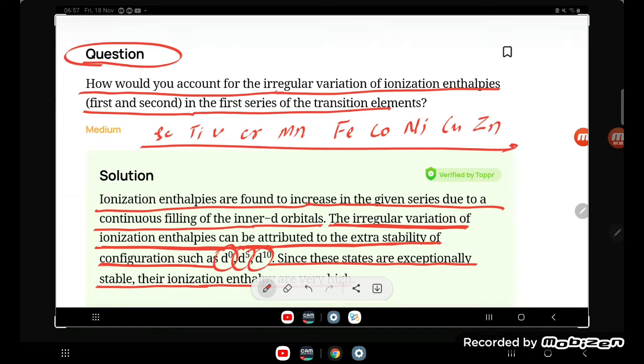So this is the answer. Wherever d0, d5, or d10 configurations are present, they are highly stable and removing electrons is difficult, resulting in high ionization enthalpy. Thank you so much for watching.